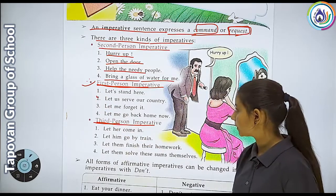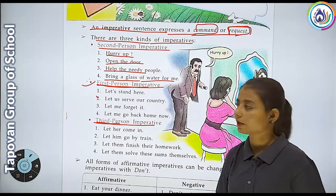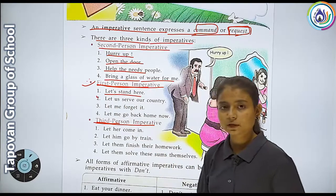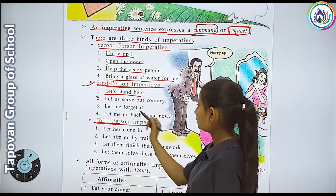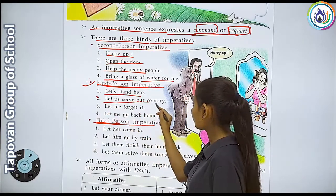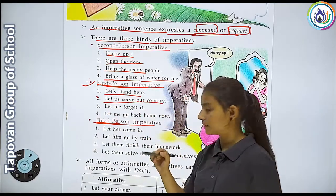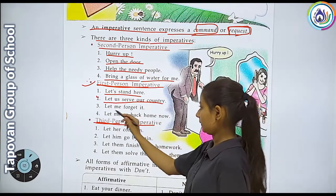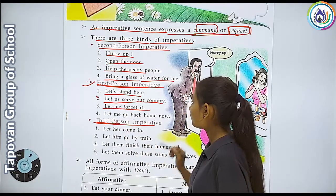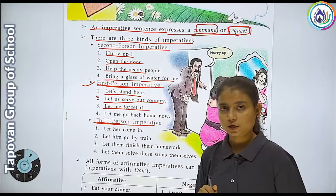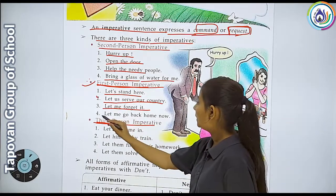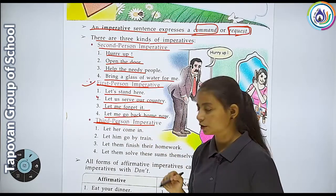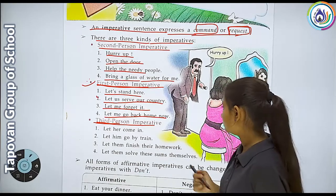First person imperative mein jab hum khud ke liye kehte hain: 'Let's stand here' - yahan par khade raho; 'Let us serve our country' - hamari country ki seva karni chahiye; 'Let me forget it' - mujhe bhoolne do; 'Let me go back home now' - mujhe abhi ghar jaane do.